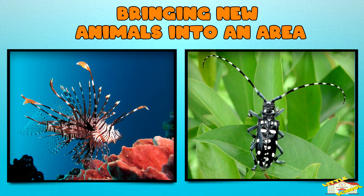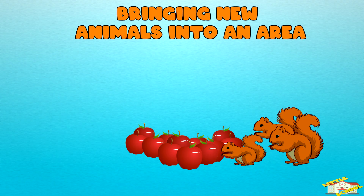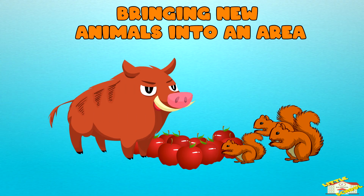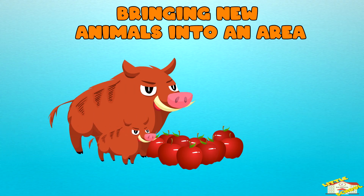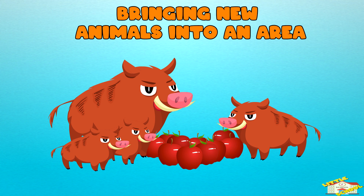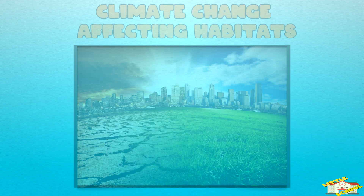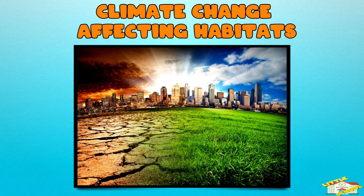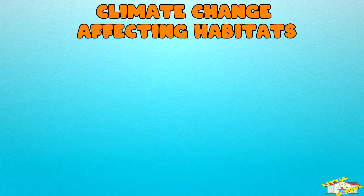Bringing new animals into an area: sometimes new animals are introduced into an ecosystem by accident, like certain kinds of fish or insects. If they don't have any predators, they might eat up all the food that other animals need, making it harder for local animals to survive.